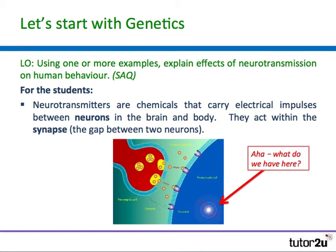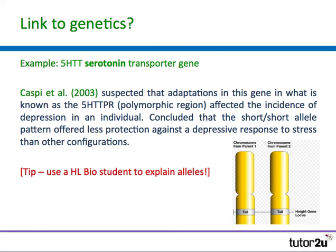A quick summary for students on what neurotransmitters are and where they act. We have the double helix for DNA there to remind us that our neurons are part of our DNA — our cells contain chromosomes that have genes and gene markers on them that are part of our DNA. Apologies to any biology teachers for what is probably a very amateur description.